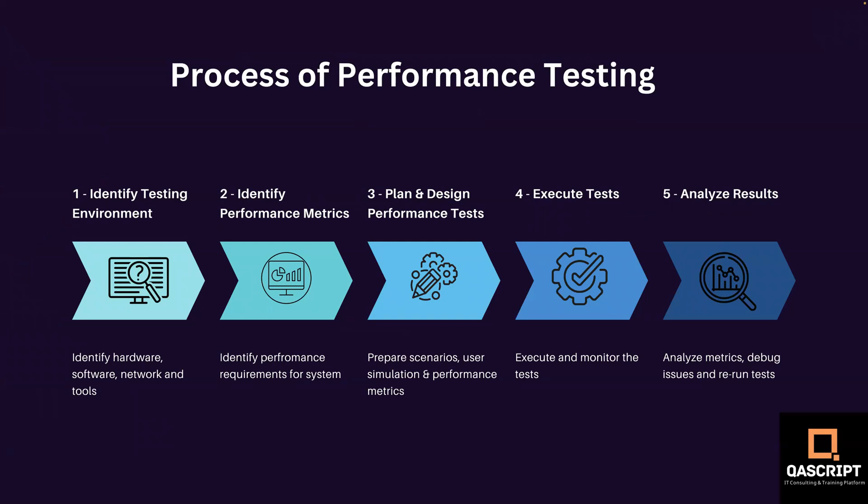Now let's understand the process of performance testing — how we do it. There are basically five steps. First, we identify the test environment, which means identifying the hardware, software, network, and tools to be used. Second, we identify the performance metrics — the performance requirements provided by the business analyst or clients — so that a benchmark can be set for the system and testing is done against that benchmark.